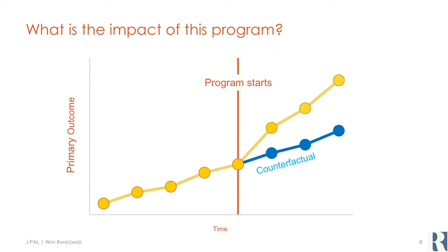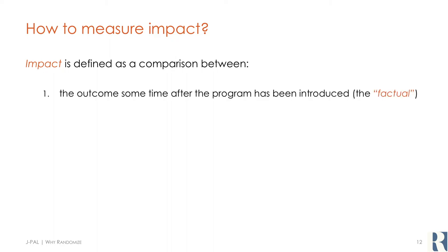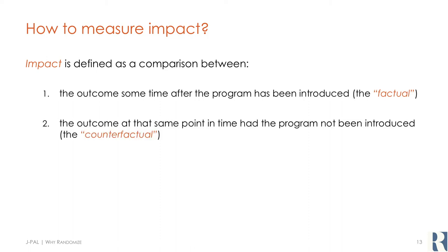So simply looking at what happened before and after is not likely to give us a good estimate of the effects of the program on outcomes for farmers. The key to knowing what's happened is to be able to say what would have happened in the absence of the program and compare it to what happened with our intervention. The impact is not the difference between the beginning and ending of the yellow line, but rather what happened on the blue line — the difference between the yellow dot and the blue dot at the end of the program. Impact can be defined as a comparison between the outcome sometime after the program has been introduced and the outcome at that same point in time had the program not been introduced.